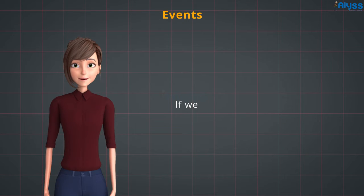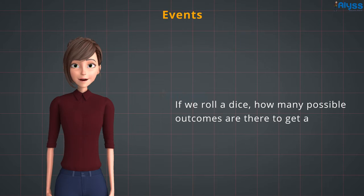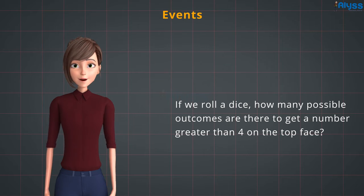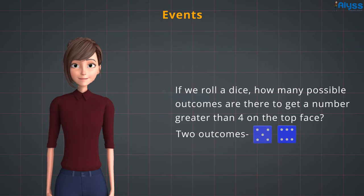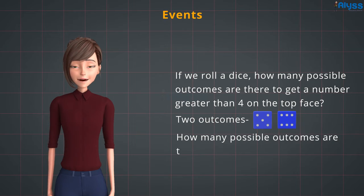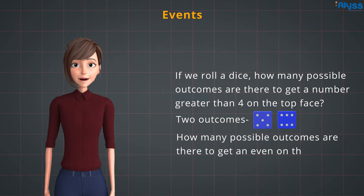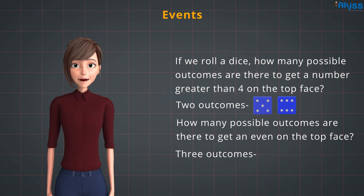If we roll a dice, how many possible outcomes are there to get a number greater than 4 on the top face? There are only two outcomes. How many possible outcomes are there to get an even number on the top face? There are only three outcomes: 2, 4, or 6.